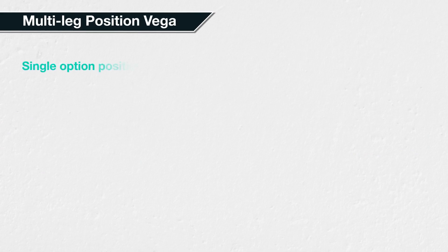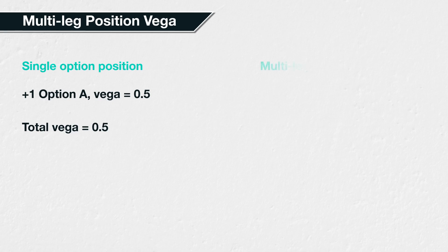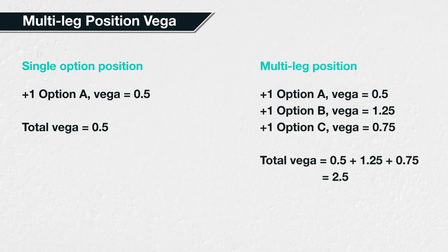So far in this section, we have only discussed the vega for individual options, but most option traders are likely to have positions or portfolios consisting of more than one option contract at a time, and they will want to know the vega of their entire portfolio. They will also want to know how their total vega will evolve as time passes, or as other parameters change, such as the underlying price. All of this information will help them gauge how their options will be affected by changes in implied volatility.